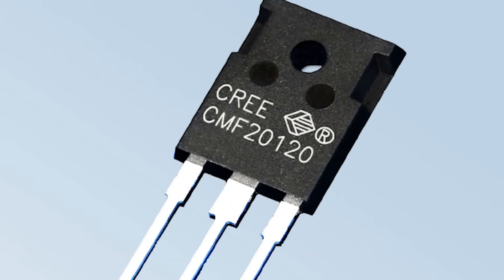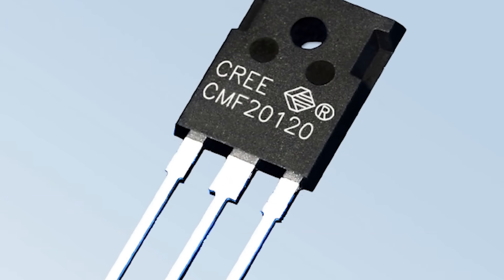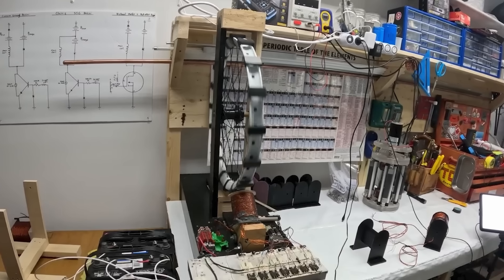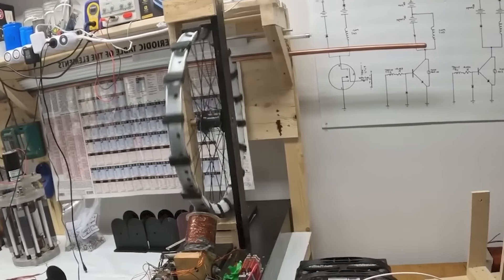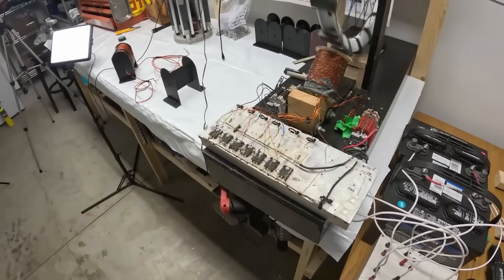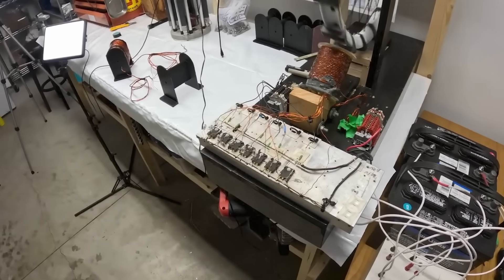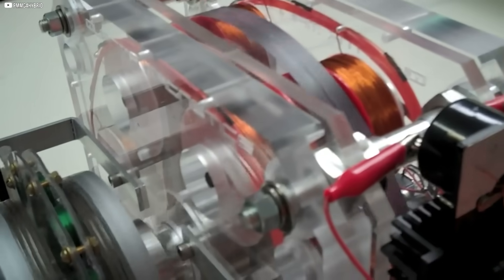We're using silicon carbide MOSFETs instead of transistors. We've designed a high-speed rotor embedded with 16 magnets, precisely balanced. It's a blend of old-school craftsmanship and modern components. And with every part assembled, this vision becomes more real.